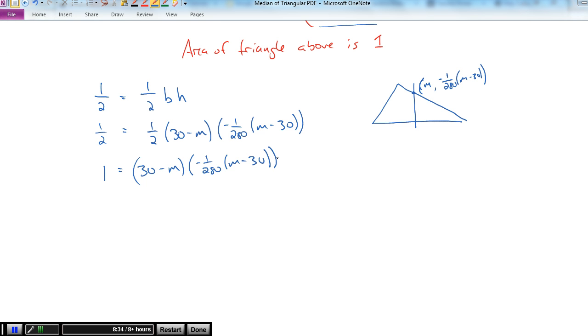Let's clean this up a little bit. How about I multiply both sides by negative 280. So, negative 280 is equal to 30 minus m times m minus 30. If you look at 30 minus m and m minus 30, you need to recognize that those numbers are opposites. Any time you commute subtraction that way, you're going to create opposites. So what I can do is express 30 minus m as m minus 30, and then take the opposite of 280. If I take the opposite of both sides, I essentially get 280 is equal to m minus 30 times m minus 30.